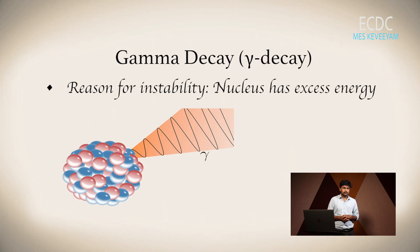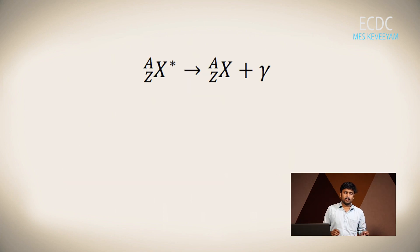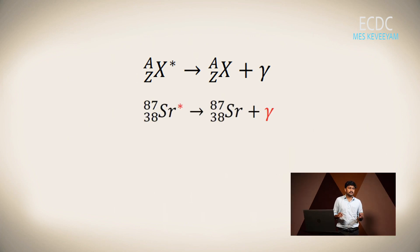If the reason for instability is the excess amount of energy, then the most probable decay process is gamma decay. An unstable nuclide will change to a stable nuclide with the emission of a gamma photon. For example, strontium-87 (denoted with a star or asterisk) will change to strontium-87 plus a gamma photon. The excess energy is liberated as a gamma photon.